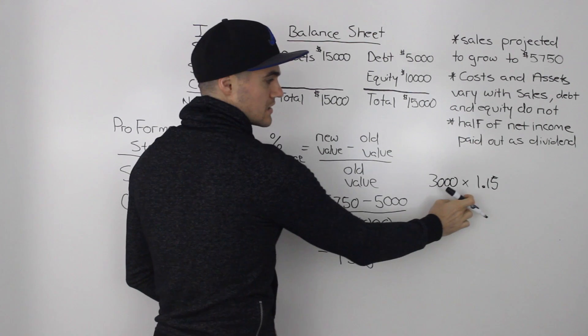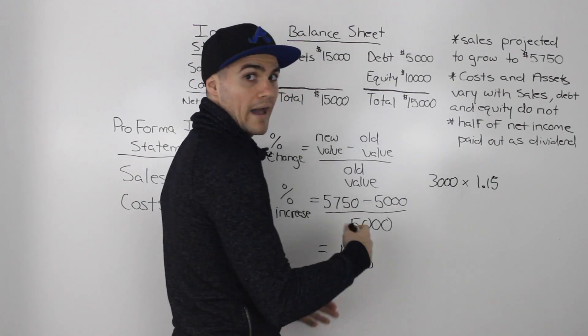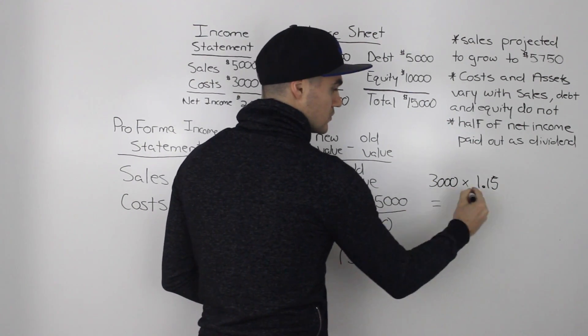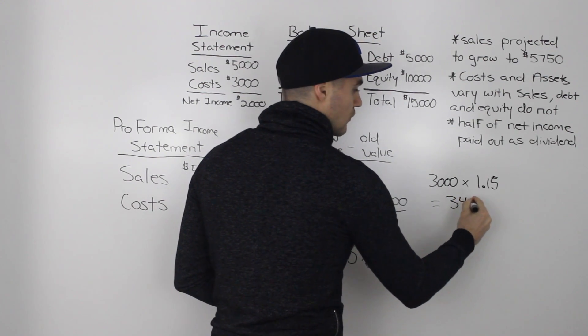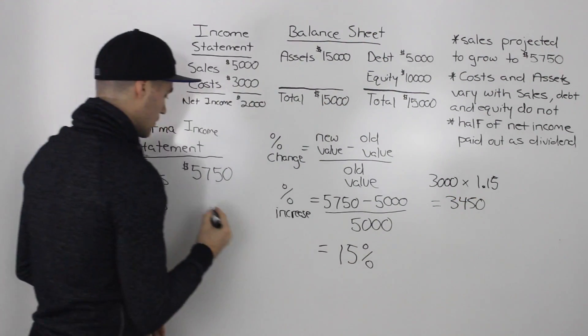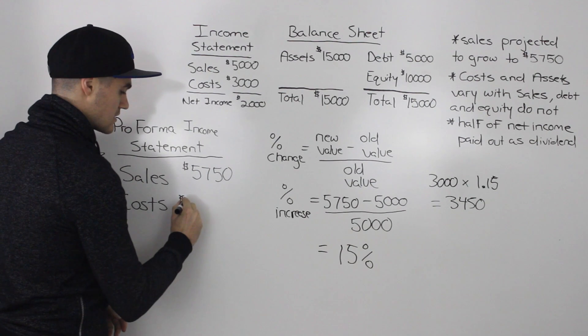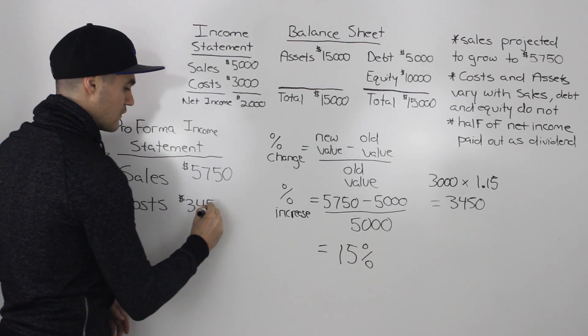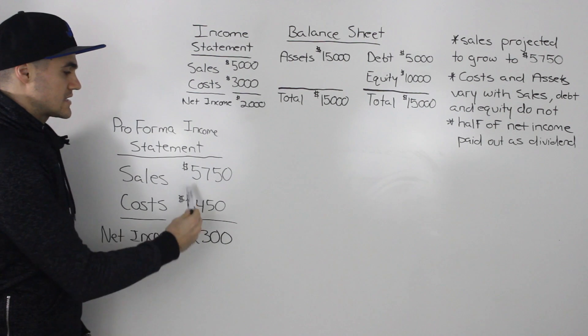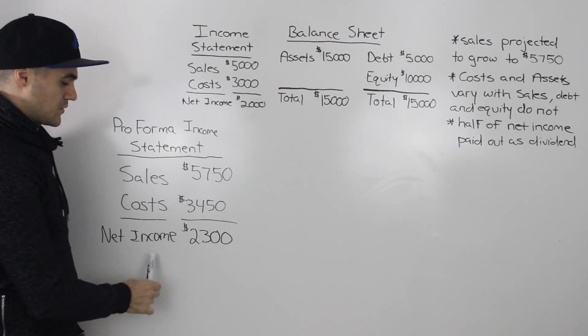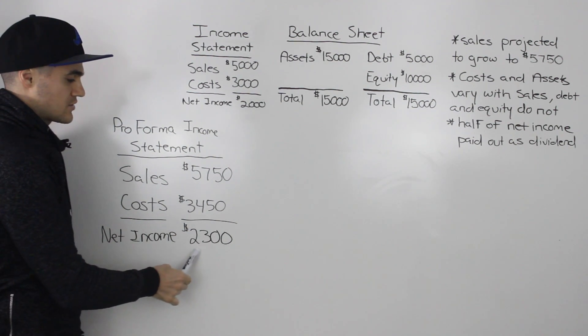So $3,000 multiplied by 1.15 meaning the costs grow at 15%. If you do that in your calculator, you would get $3,450. So the cost here would be $3,450. And then taking the sales and then subtracting the cost, we would get a net income of $2,300.